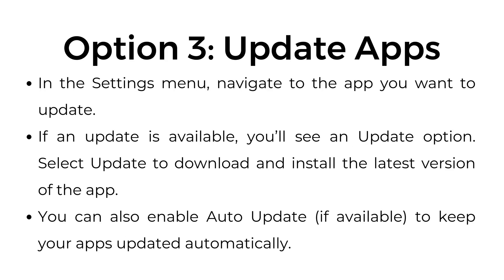Option number three: update apps. In the settings menu, navigate to the app you want to update. If an update is available, you'll see an update option. Select update to download and install the latest version of the app. You can also enable auto-update if available to keep your apps updated automatically.